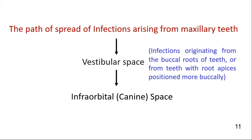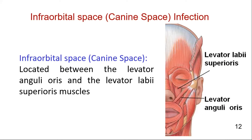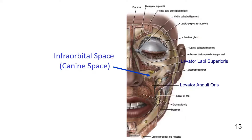For infections originating from the buccal roots of the teeth, or from teeth with root apices positioned more buccally, the usual path of spread is to the vestibular space and then to the canine or infraorbital space in the maxilla. The canine space or infraorbital space is bounded by the levator labii superioris and levator anguli oris muscles. When infections originating from the apex of the maxillary canine root perforate the alveolar bone superior to the attachment of levator anguli oris and inferior to the origin of the levator labii superioris, the canine space becomes involved.